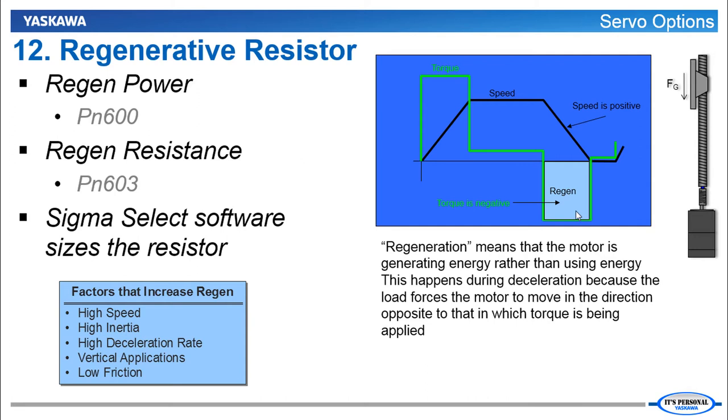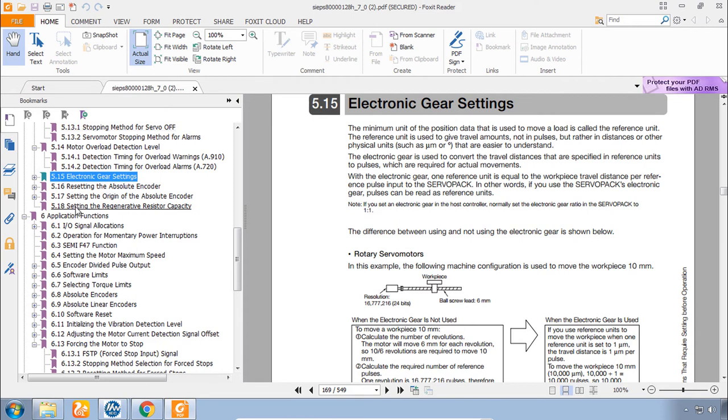Often the amplifier's capacitor can absorb this energy. But in some cases it cannot and you'll need to connect an external regenerative resistor. For which there are two parameters. One is the rated power that should go through that resistor. And the regen resistance. How do you know if you need this? Well our software Sigma Select when you size the servo will tell you how much regen resistance you need. What the resistance should be and the power of that resistor. And of course in that software you can experiment with different speeds, inertias, deceleration rates, angles of inclination for vertical applications and different friction levels to see how that model will affect the predicted regeneration resistor.